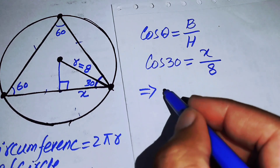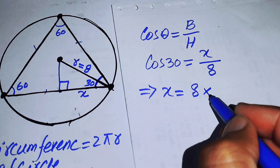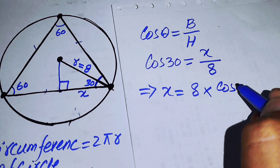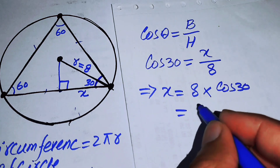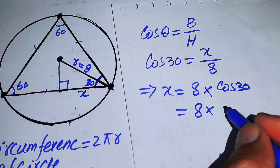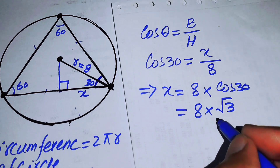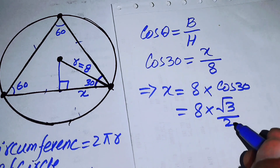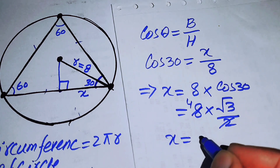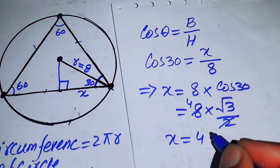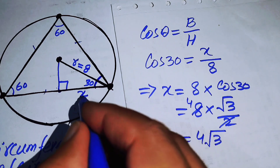We find x = 8 × cos(30°). Since cos(30°) = √3 / 2, the 2 and 8 simplify to give x = 4√3.